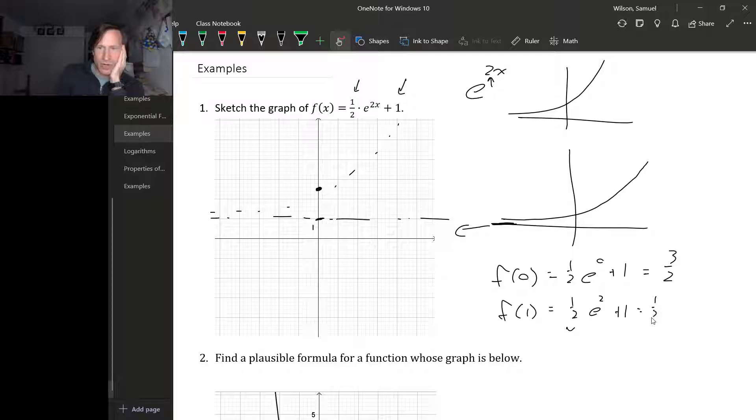This gives me about 4.695. This is a decimal approximation. Of course, any integer power of e is going to be irrational. So 1, 2, 3, 4, and a little bit more than half. It's going to look something like this.